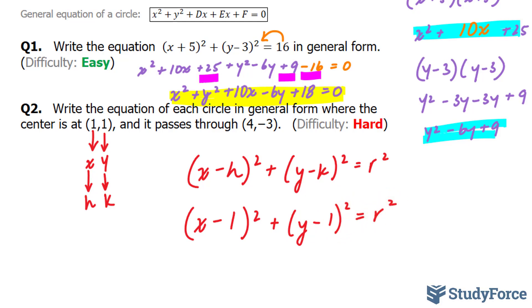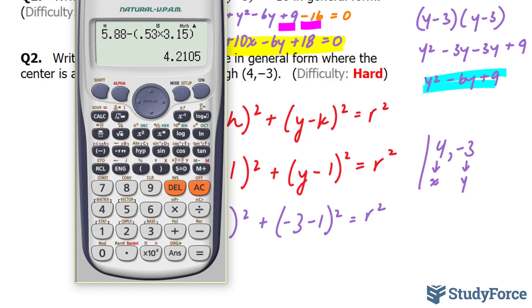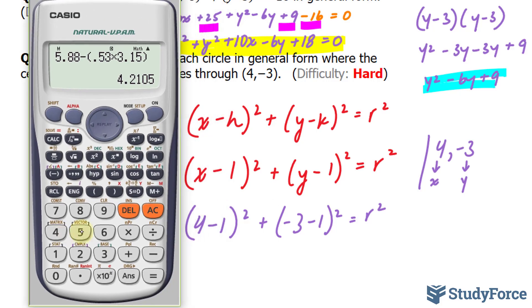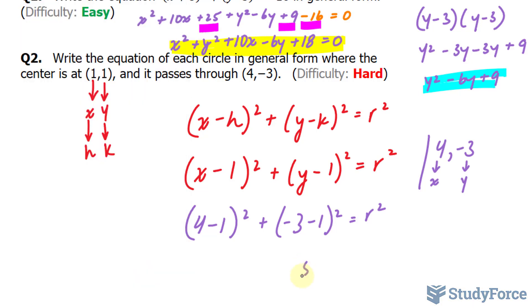They haven't told us our radius, although we can easily find our radius by substituting the point in which this circle passes through. We're told that it passes through (4, -3), so I'm going to use this as my x coordinate and this as my y: (4 - 1)² + (-3 - 1)² = r². I'm going to evaluate the left side. 4 - 1 is 3, squared is 9. -3 - 1 is -4, squared is 16. So I have 25 on the left side and r² on the right side. I will square root both sides, which gives me an r value of 5.